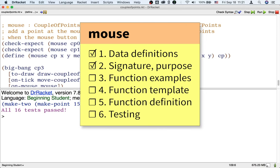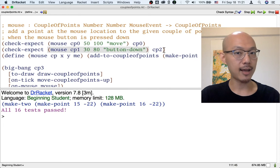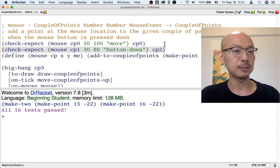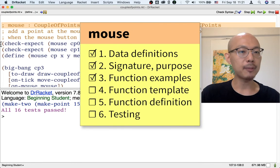We also have to update in step three the examples, because this example is no longer valid. Here the mouse is moving, so we better just change it to CP0. So the same input world is the output world, but if the button is pressed down, then we should still get CP2. The examples no longer say how we get from CP0 to CP1, but that's okay, because the mouse function, like all functions we pass to Big Bang, is only concerned with one step at a time. So we've updated the examples.